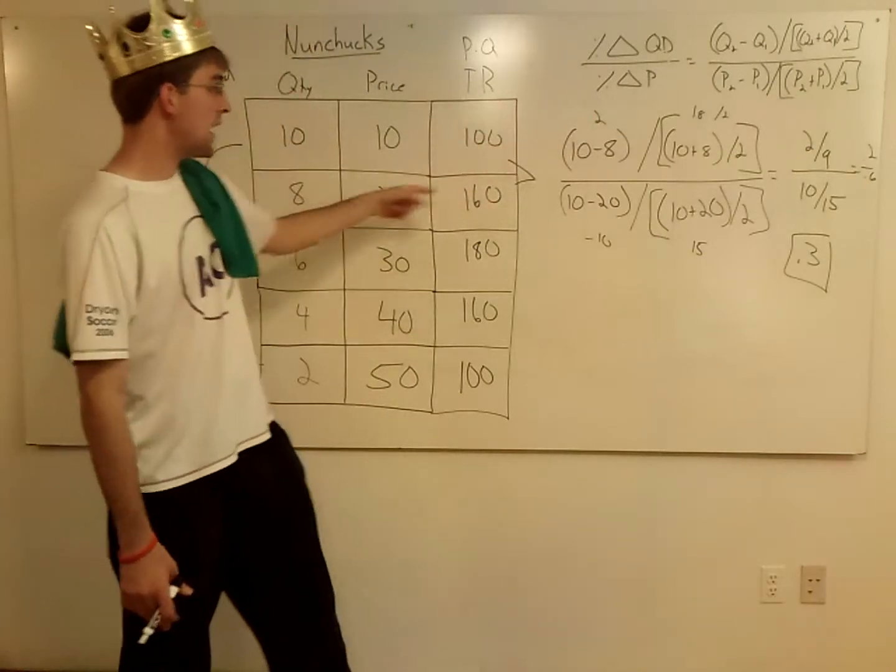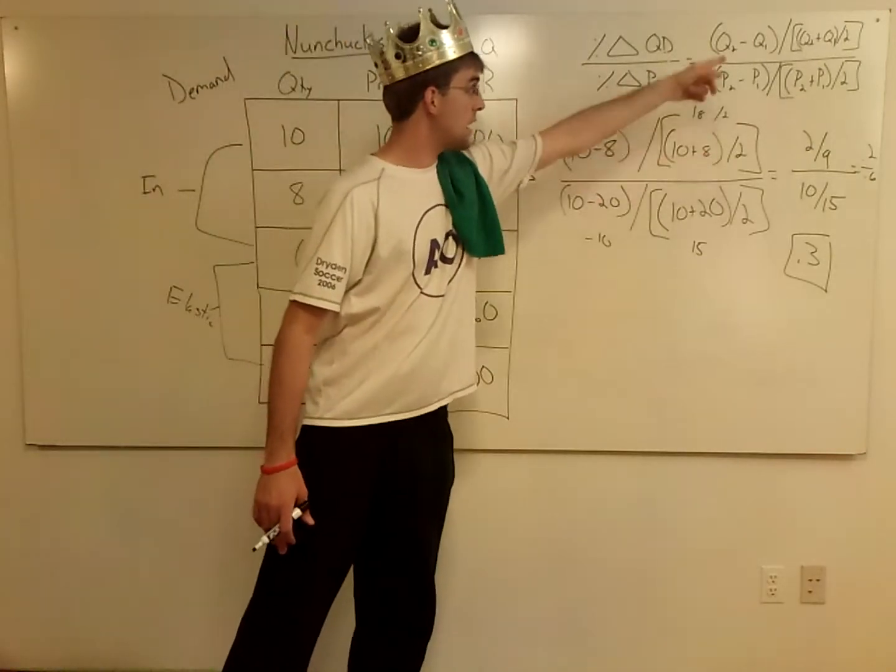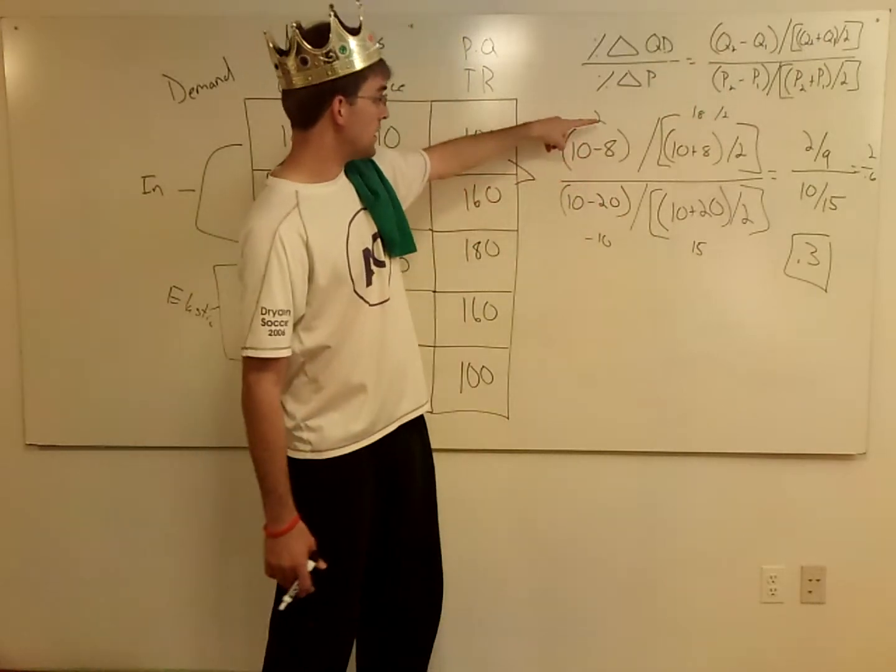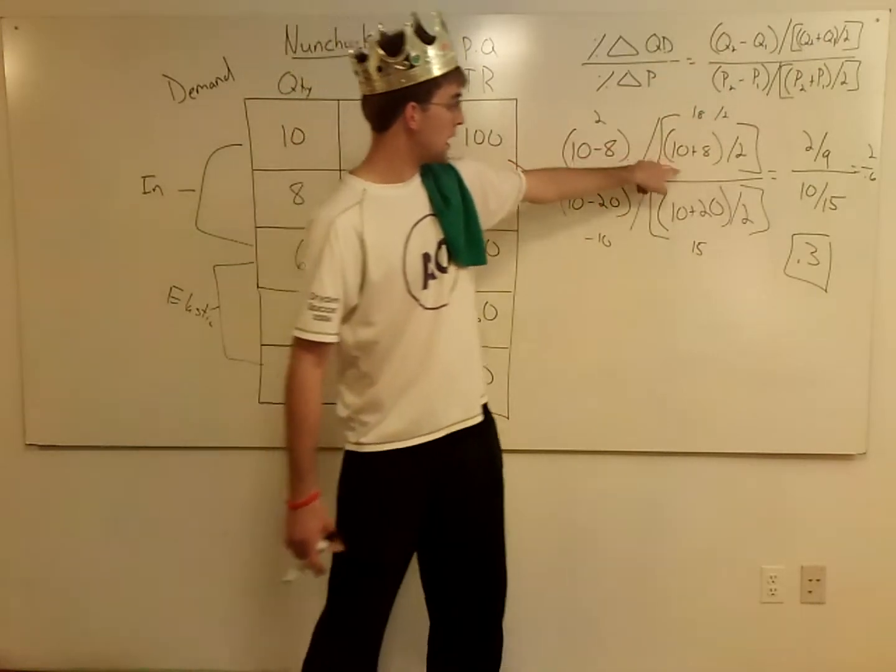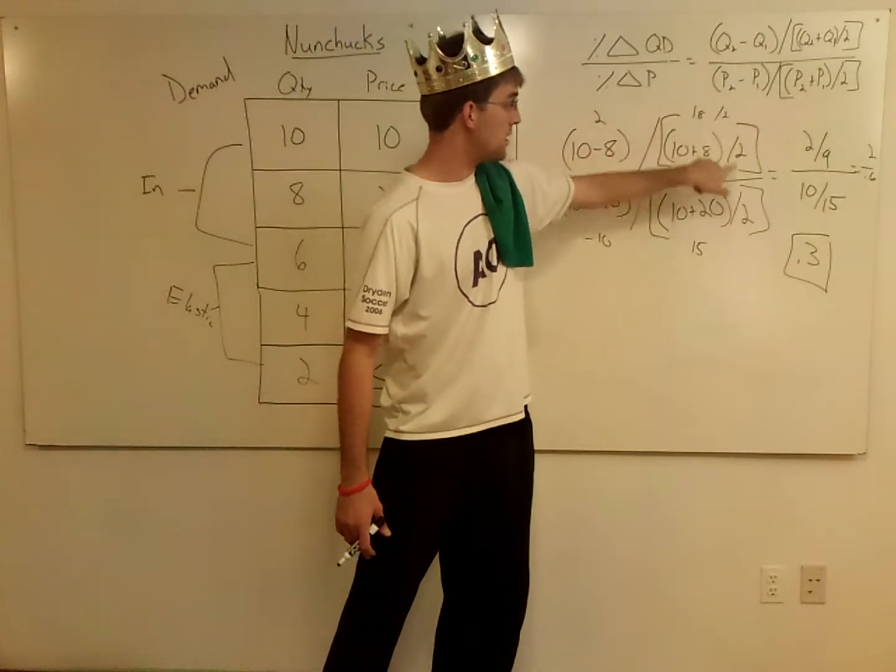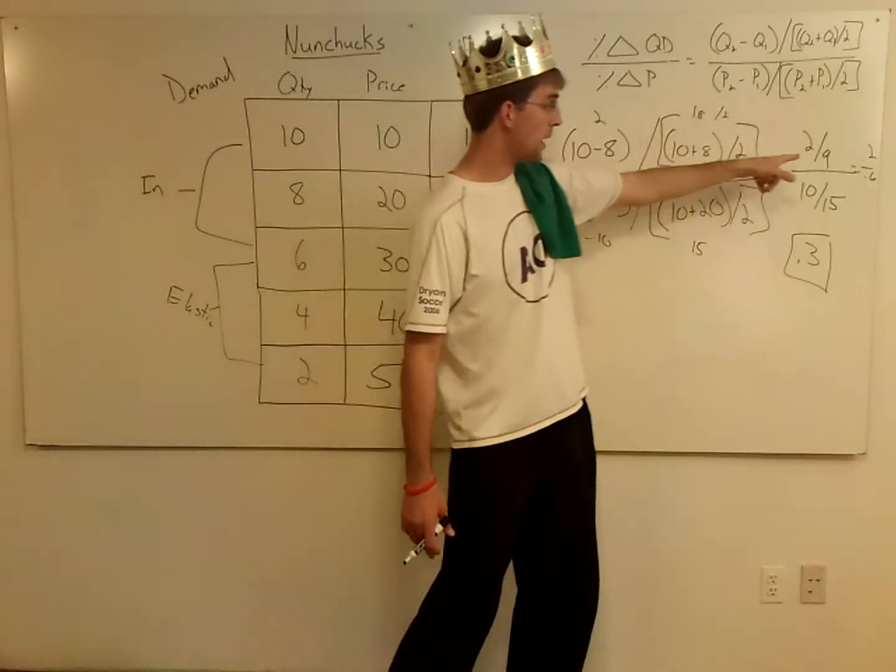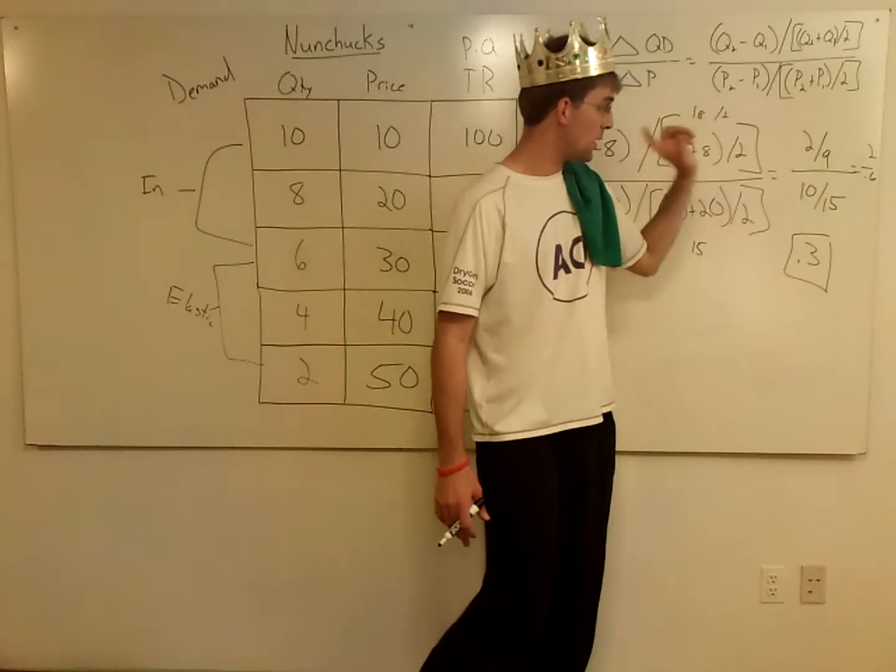So I took my Q2, I made it 10 minus 8, 10 plus 8, Q2 plus Q1 divided by 2. This went to 2. 10 plus 8 was 18 divided by 2. 18 divided by 2 is 9. So on the top I got 2 over 9, which comes out pretty close to 0.2 repeating.